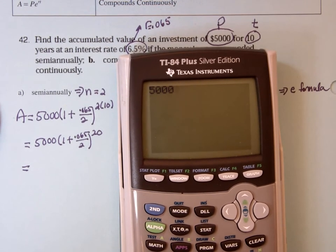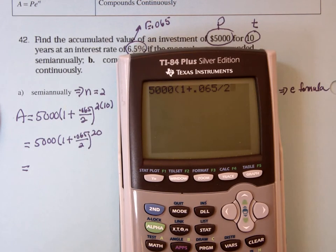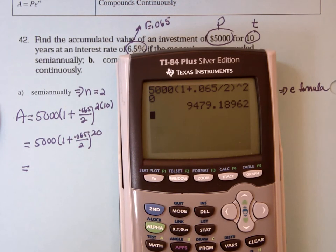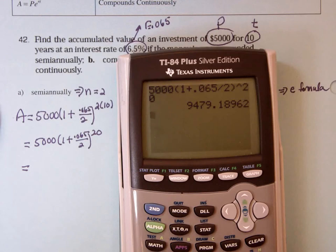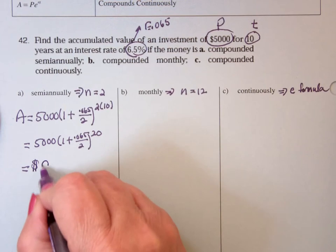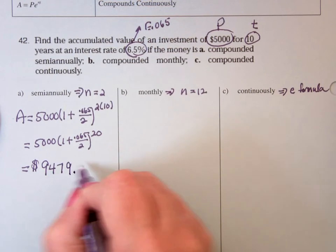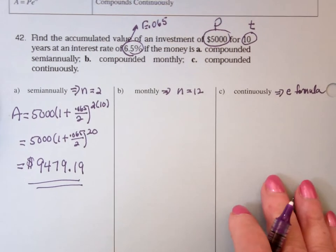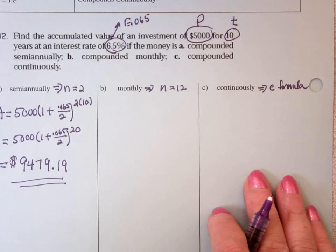5,000 times 1 plus .065 divided by 2 to the 20. That's why I do that final multiplication. And it's $9,479.19, because we round to two decimal places, because we're talking about money. $9,479.19. After 10 years. That's 6.5%. So just about doubled.